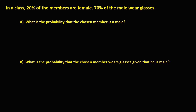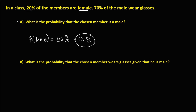So in a class, 20% of the members are female and 70% of the male wear glasses. What is the probability that the chosen member is a male? Since 20% of the members are female, the probability that the chosen member is a male is 80%. Converting to decimal, that's 0.8. So this is the probability.